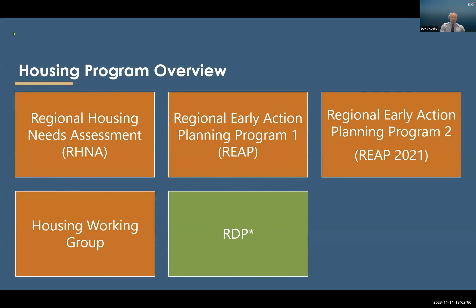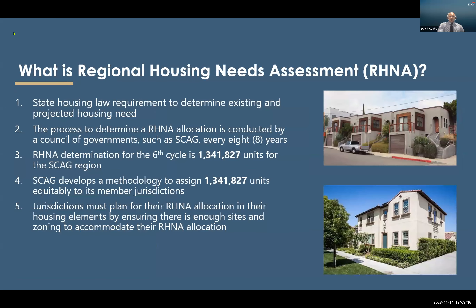SCAG's housing program is made up of various components: the Regional Housing Needs Assessment, RHNA; the Regional Early Action Planning Program, REAP 1.0; REAP 2.0; our Housing Working Group; and the Regional Data Platform, which has several housing-related tools. RHNA is a state-mandated process to determine existing and projected housing need, conducted by a Council of Government like SCAG every eight years. The RHNA determination for the sixth cycle was just over 1.3 million units for the SCAG region, and SCAG develops a methodology to assign these units equitably to member jurisdictions, who must then plan for their allocation in their housing elements.